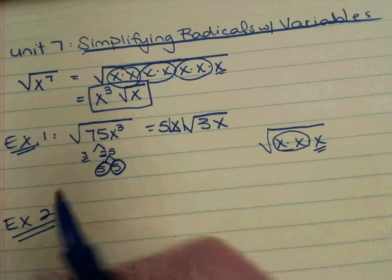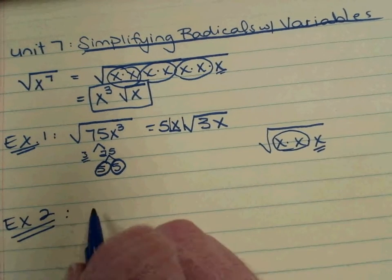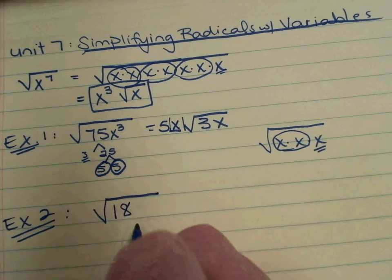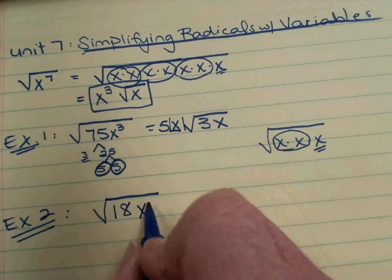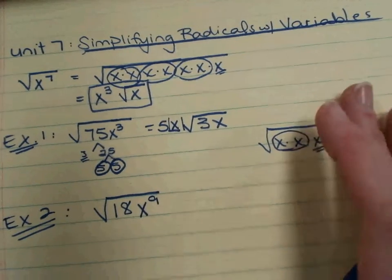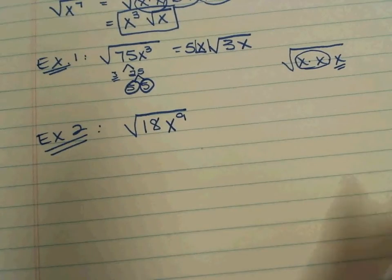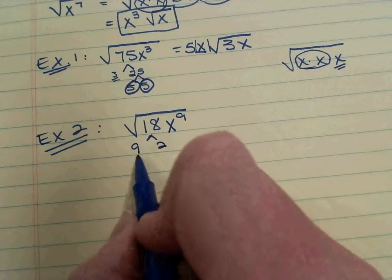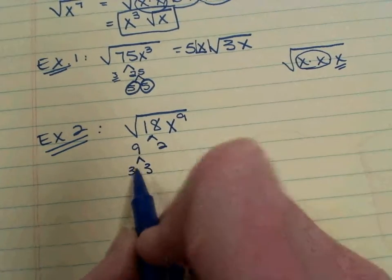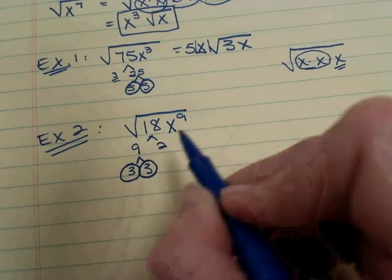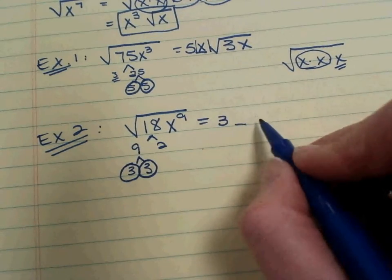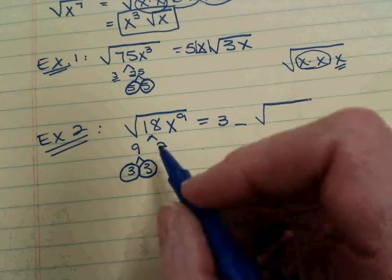Example 2. Square root of 18 x to the 9th. Simplify. Square root of 18. So it's 9 and 2. 3 and 3. Pair of 3's comes out. Breaks free. Leave some room for my variable. 2 is left over. Stays underneath.